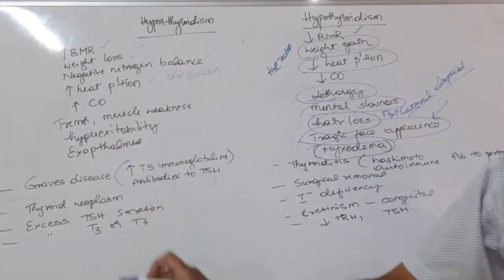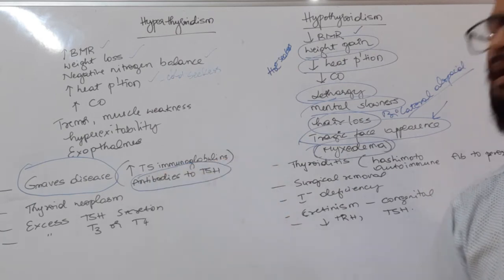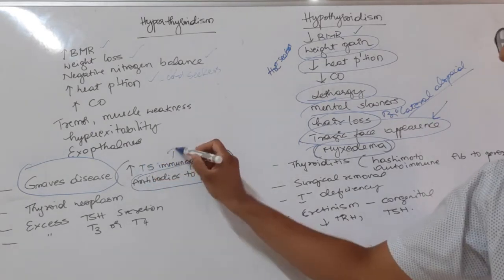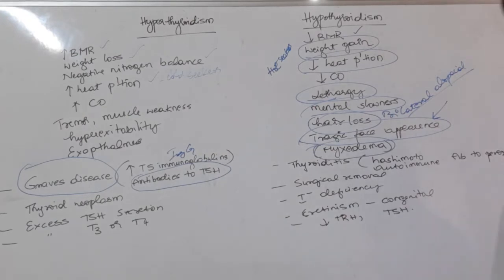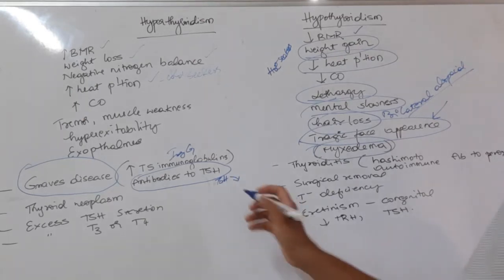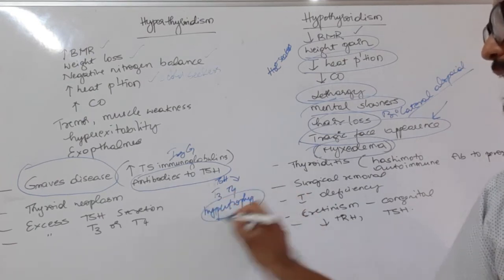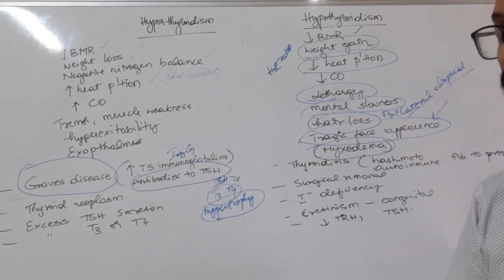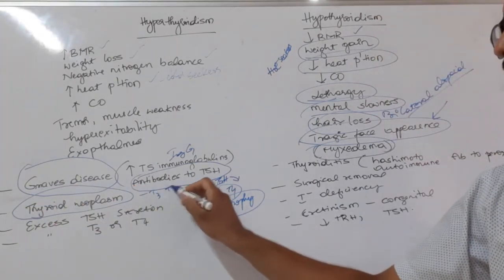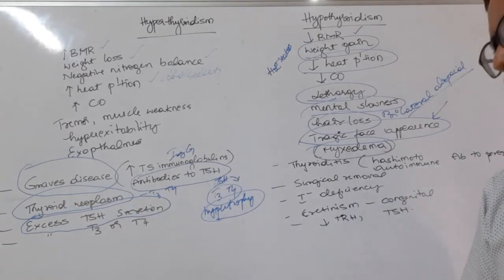The reasons for hyperthyroidism include: Graves' disease, in which antibodies are produced against TSH receptors — specifically thyroid stimulating immunoglobulins of class IgG — which act like TSH, continuously triggering the thyroid gland to produce more T3 and T4, causing hypertrophy of the gland. Thyroid neoplasm, where there is excess production of T3 and T4, and also problems in the anterior pituitary leading to excess TSH secretion.